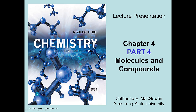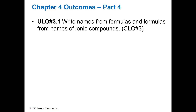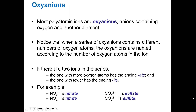Welcome back to chapter 4, part 4. We're still talking about how to name and write formulas for ionic compounds, but in this section we're going to talk about polyatomic ions. Most polyatomic ions are what we call oxyanions, so you're going to see an oxygen in there somewhere — usually oxygen and another element, like NO₃, NO₂, SO₄, that kind of thing.